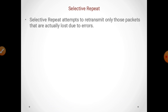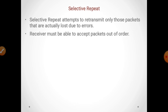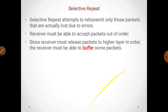Selective repeat attempts to retransmit only those packets that are actually lost due to errors during transmission to the receiver. यानि कि selective repeat में sender वही packet send करता है जो actually transmission के दौरान lost हुआ है।